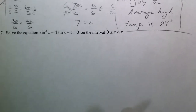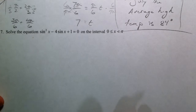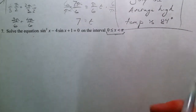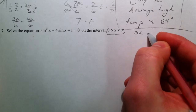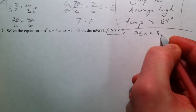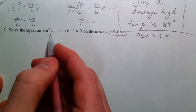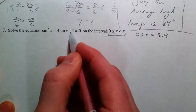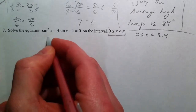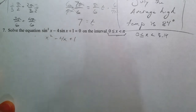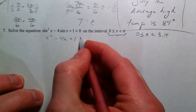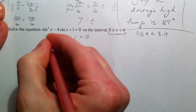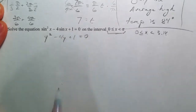Next problem: sine²(x) minus 4 sine(x) plus 1 equals 0, solving on the interval 0 to π — approximately 0 to 3.14. We have sine squared, so the first thing we try is factoring: think of this as x² minus 4x plus 1. What multiplies to 1 and adds to negative 4? It doesn't factor, so instead of x I'll use y for substitution: y² minus 4y plus 1.